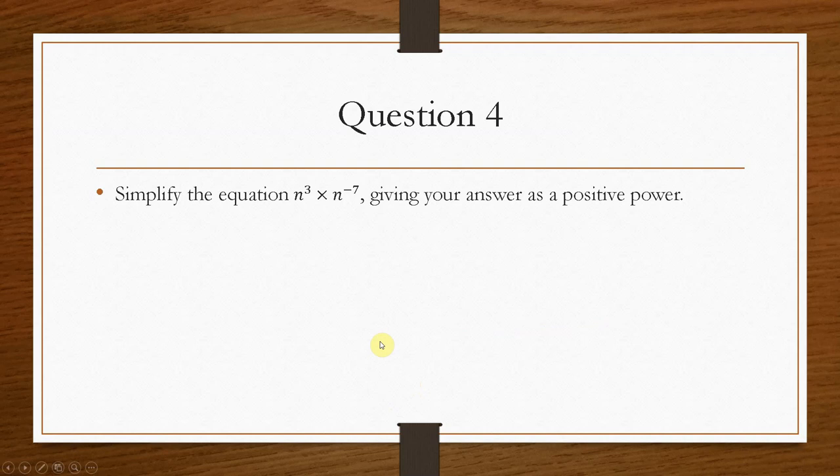And then lastly, question 4: simplify the equation n cubed times n to the power minus 7, giving your answer as a positive power. Very important. This is where your last mark would come from in the exam.